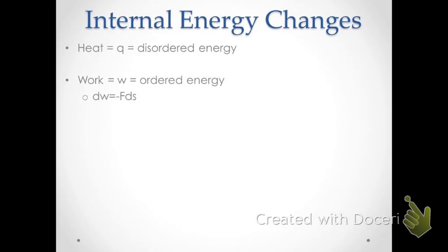To get a finite amount of work done in any calculation, we're going to have to simply integrate. As an aside, if at any point you're unsure what to do in a problem, the answer is more than likely going to be: integrate. We'll be doing a lot of that this semester. To get the work done in a process, we integrate, and we'll be doing specific examples later on.